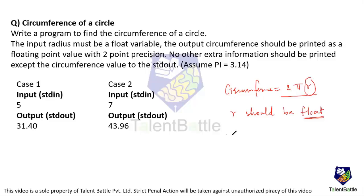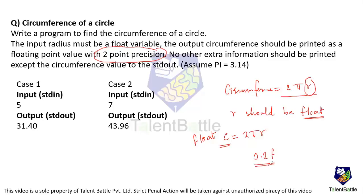The output circumference c should also be a float data type. Additionally, the output must be printed with two-point precision, so we will use the format specifier %.2f when printing. No extra information should be printed except the circumference value. The pi value to be used is 3.14.